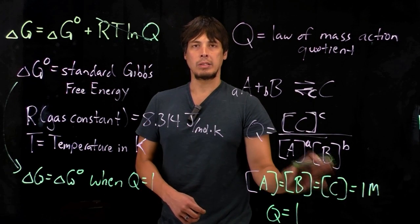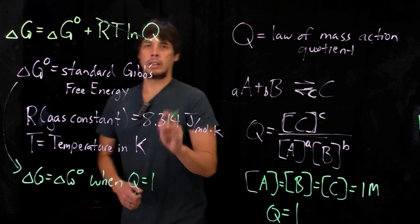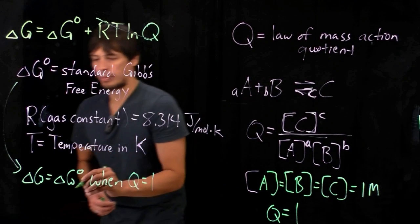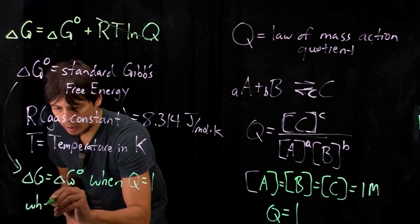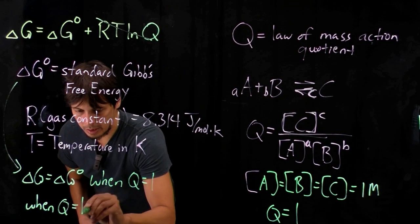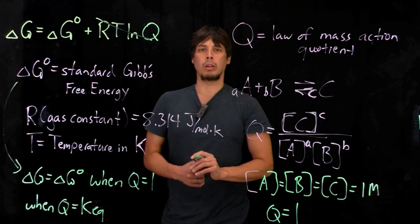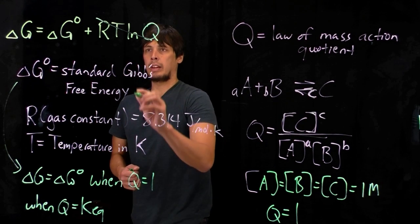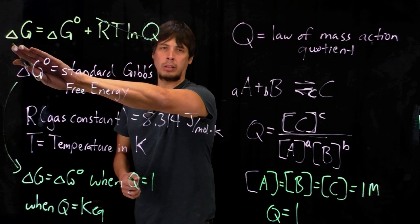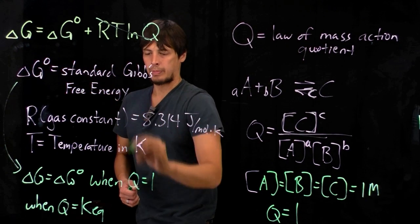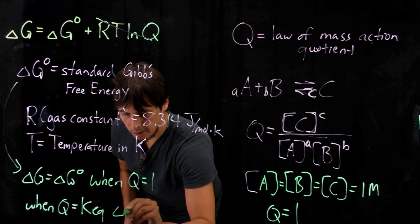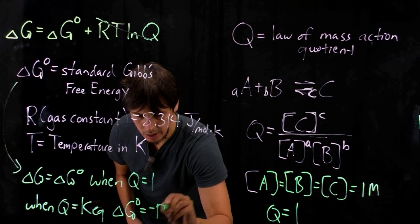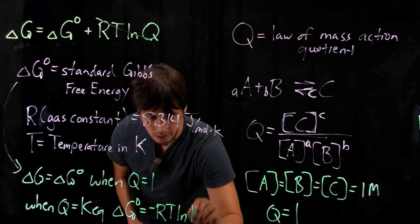Or rather, when the concentrations of the reactants and the product all equal one molar. The second special case is at equilibrium. When Q equals the equilibrium constant, which you've seen before when you studied equilibrium in general chemistry, then at equilibrium, delta G is equal to zero.